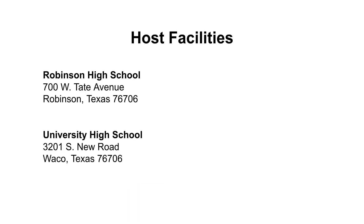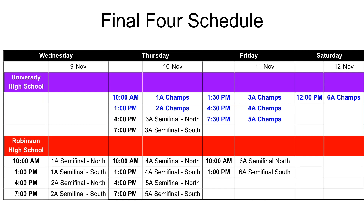We're going to be returning to Central Texas this year. West is not available, so we'll be at Robinson High School, located in Robinson, Texas, just southeast of Waco. University High will be our other host facility. Semifinals will begin for 1A-2A on Wednesday at Robinson High School, followed by 4A-5A and 6A. All championships will be held at University High School. We've had to adjust time schedules, especially on Friday, to coordinate with our host facilities.